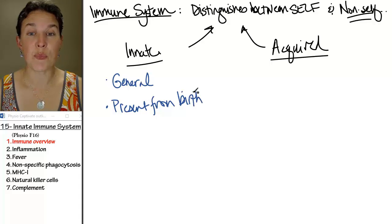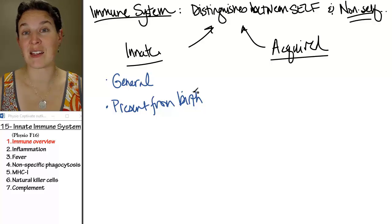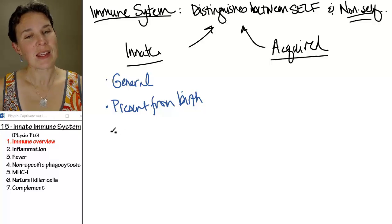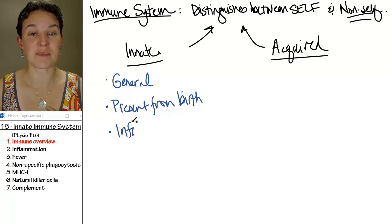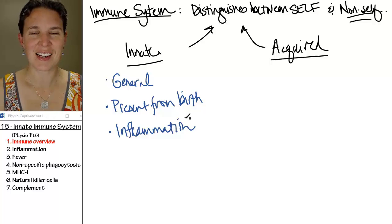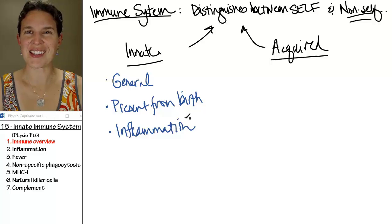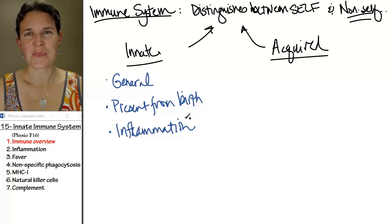The innate immune response is present from birth. So you're born with the ability to generate an innate immune response. The innate immune response is very based on inflammation.